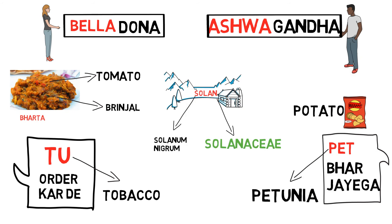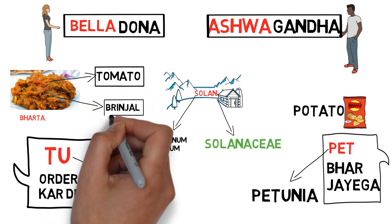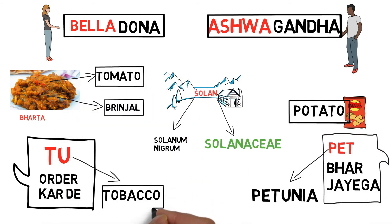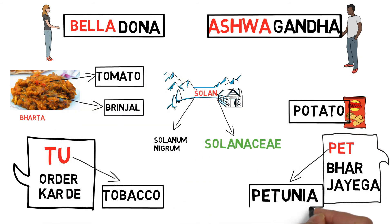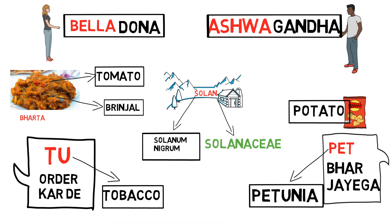Beladona. Ashwagandha. Tomato. Brinjal. Potato. Tobacco. Petunia. Solanum nigrum.